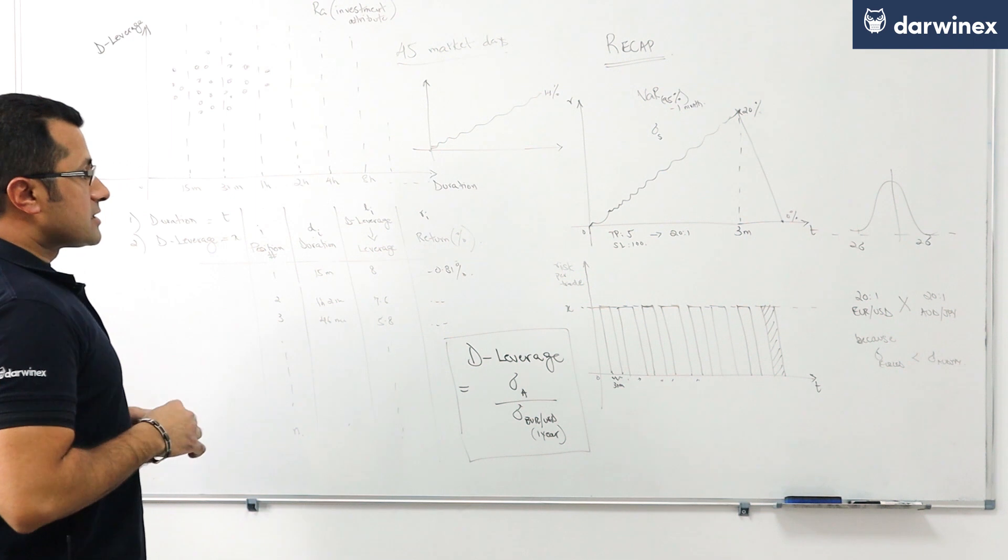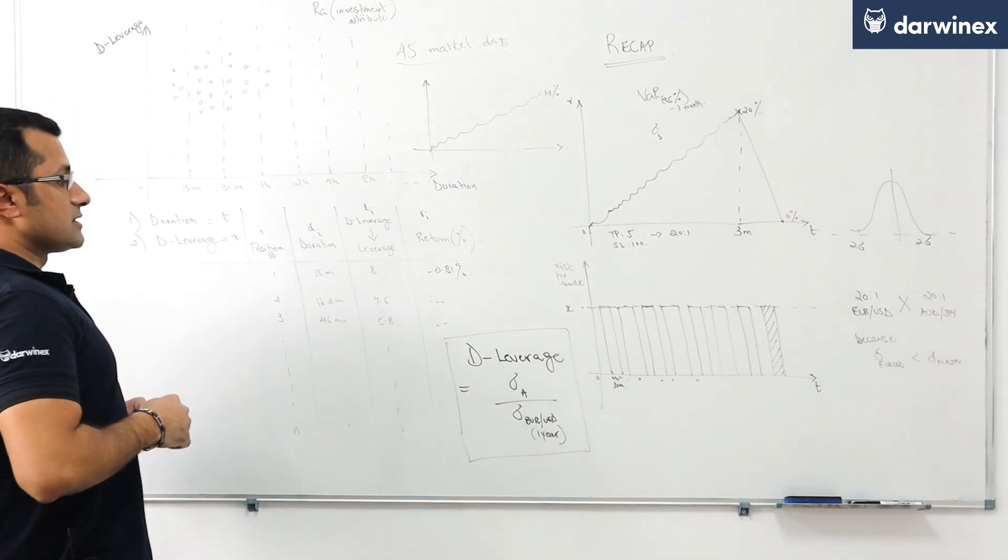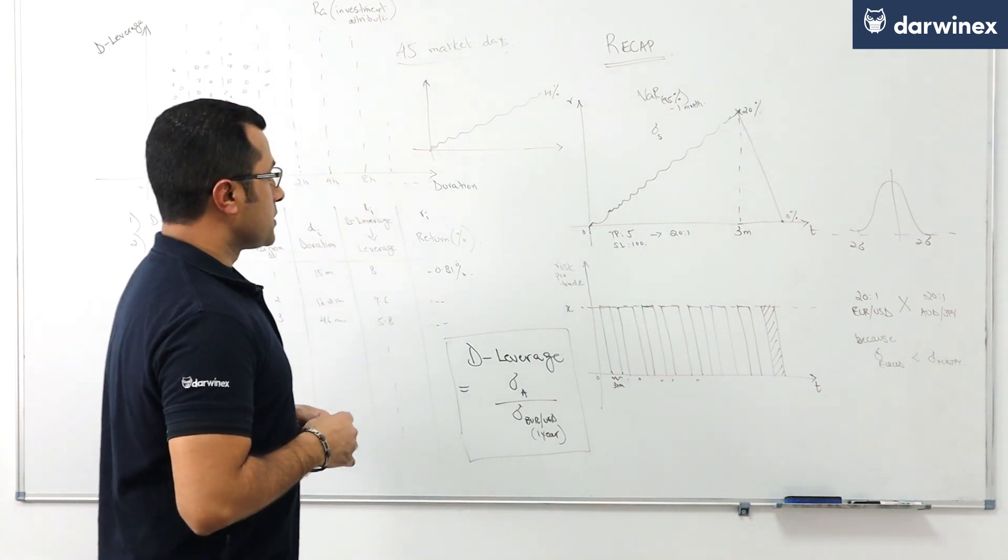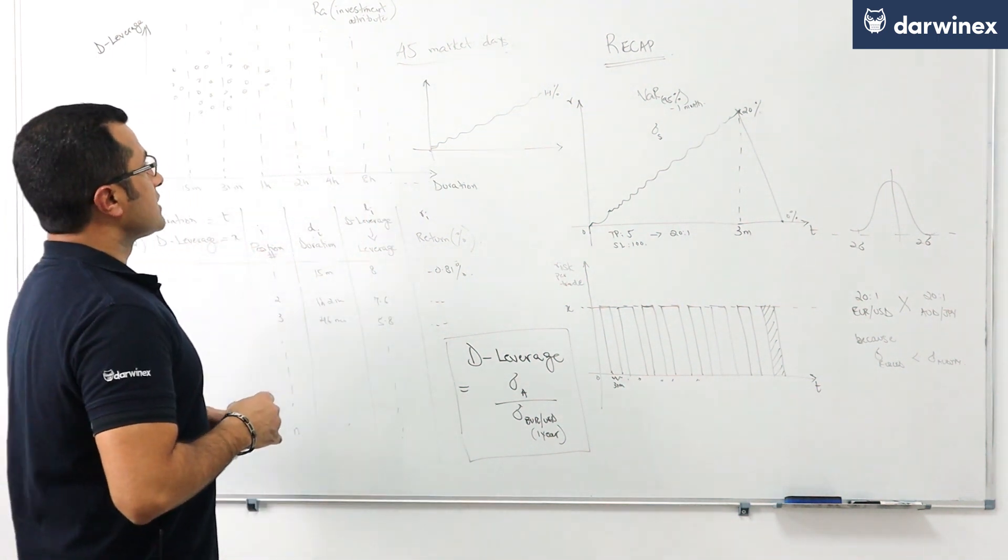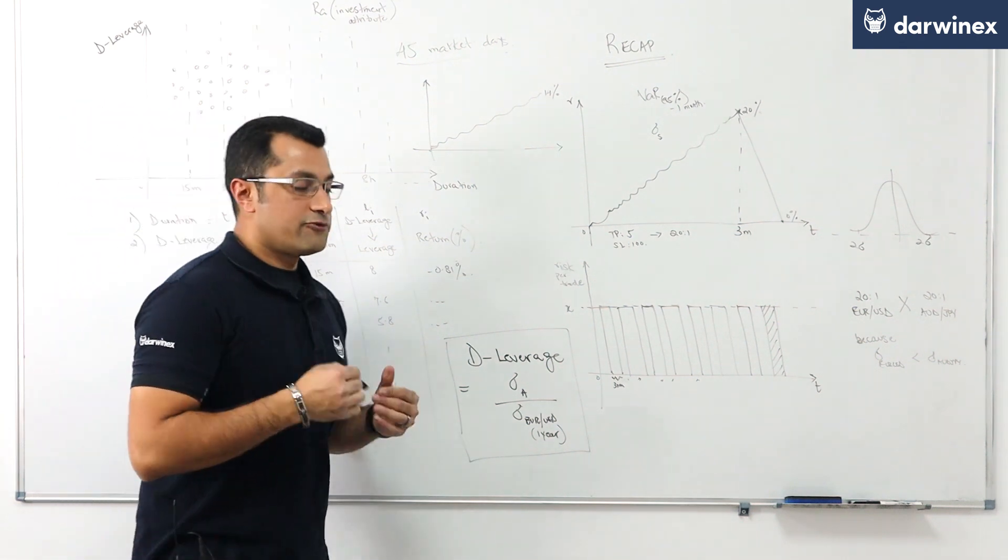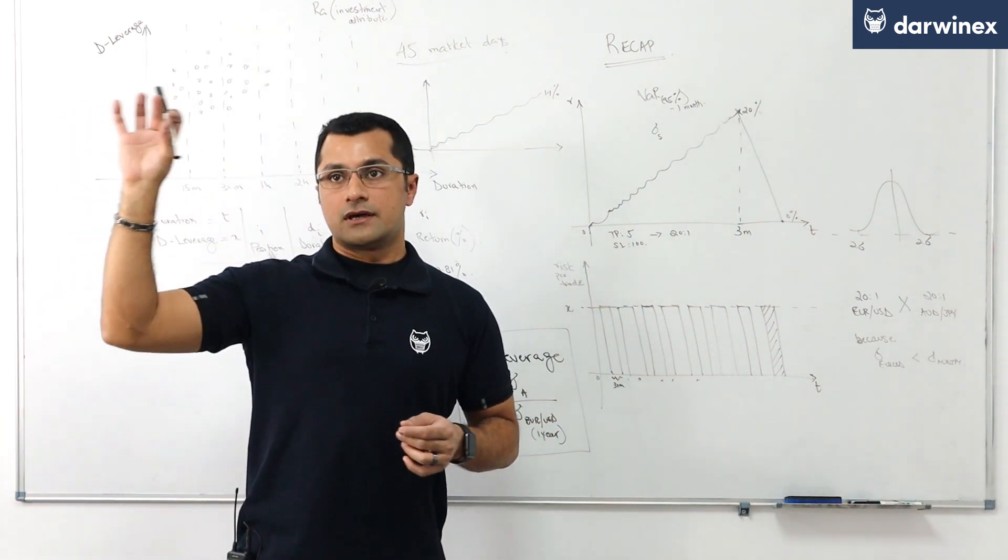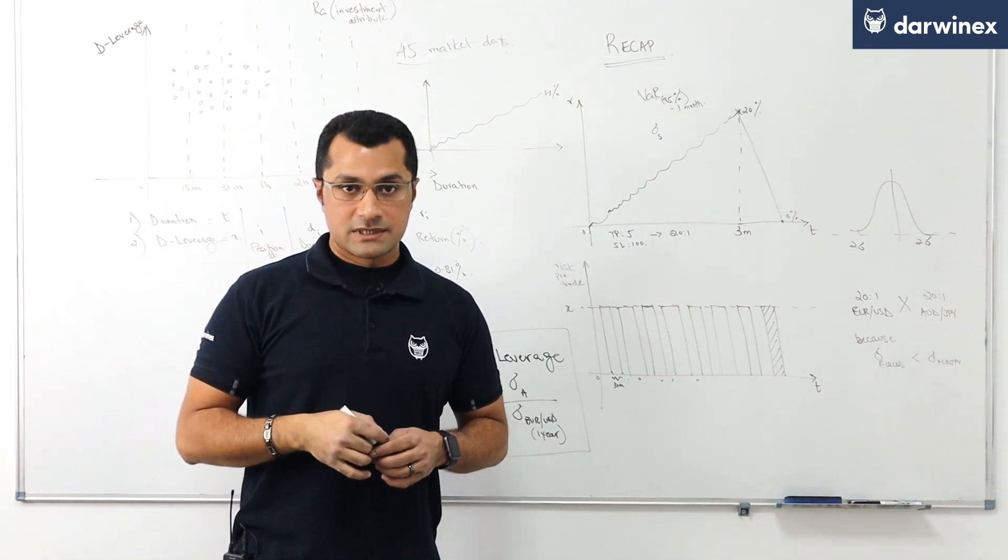So in order to take this conversation forwards as to how we use the deleverage calculated for each position at DarwinX to better approximate value at risk we have to consider a few additional things.